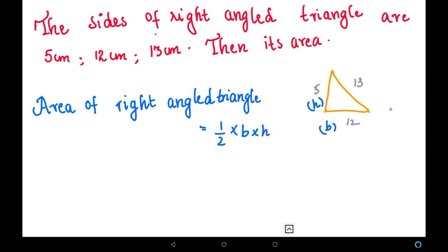We have the height value and the base value. Substituting into the formula: half times 12 times 5. If we cancel, we get 30 square centimeters.